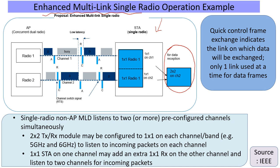That is where EMLSR comes in, where a client device with a 2x2 implementation is able to also listen as a 1x1 for certain frames and certain rates. So it basically doesn't increase the complexity of the radio solution too much, and at the same time it can add some benefits.